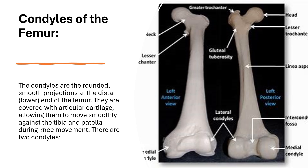There are two condyles. The medial condyle is located on the inner side of the femur, and it articulates with the medial tibial plateau of the tibia. It is larger than the lateral condyle to support more of the body's weight, as the centre of gravity is closer to the medial side. It plays a really important role in weight bearing and knee stability.